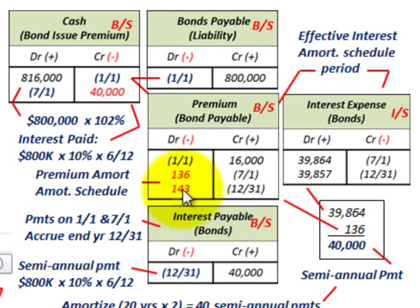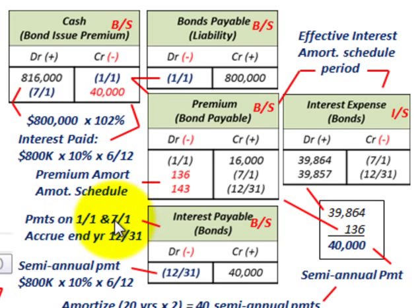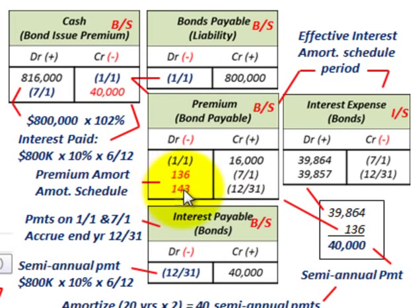Now let's look at the year-end accrual on December 31st. We're not paying interest to the bondholders until January 1st, but we have to accrue this interest. The payments are on January 1st and July 1st, so we credit interest payable for $40,000. We're not paying cash at this point — we're setting up the semi-annual payable and we also have to amortize the premium down off our amortization schedule for that second payment period.